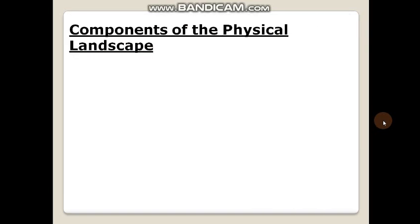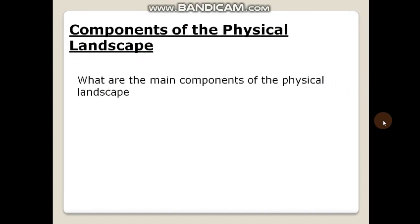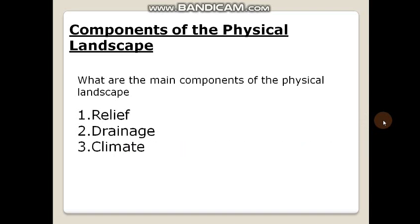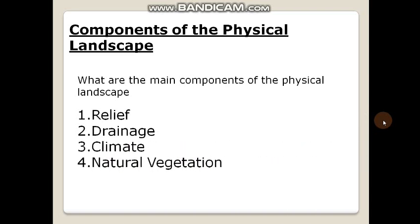Now we will see what are the components of the physical landscape. There are four main components of the physical landscape: relief, drainage, climate, and natural vegetation.